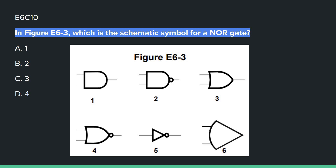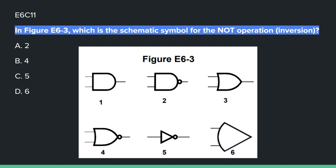E6C10: In figure E6-3, which is the schematic symbol for a NOR gate? Answer is D, number 4. E6C11: In figure E6-3, which is the schematic symbol for a NOT operation or inversion? C, number 5.